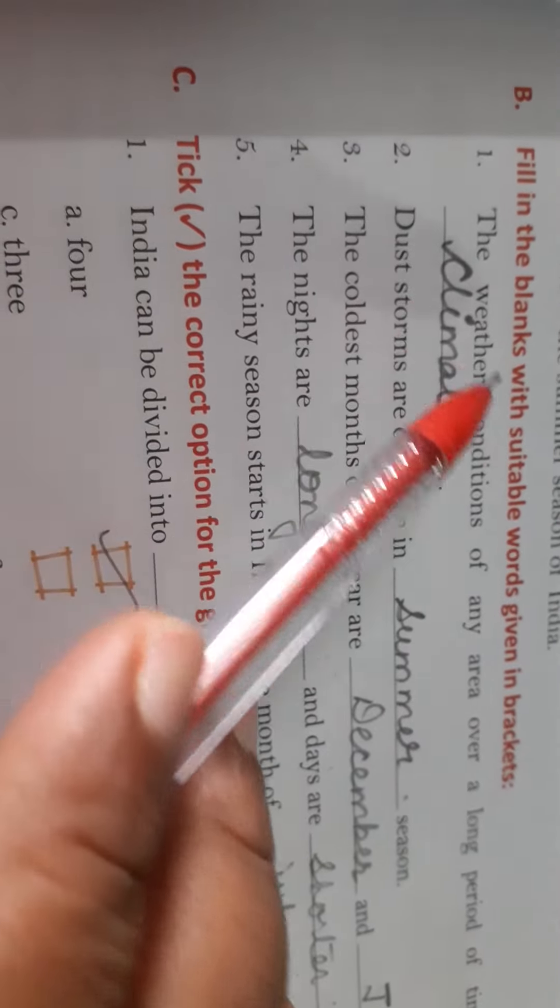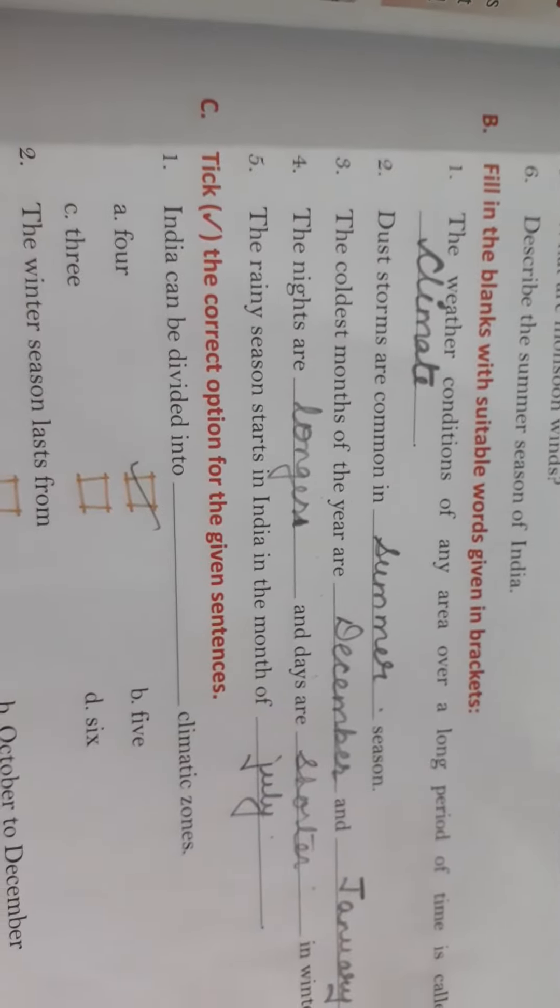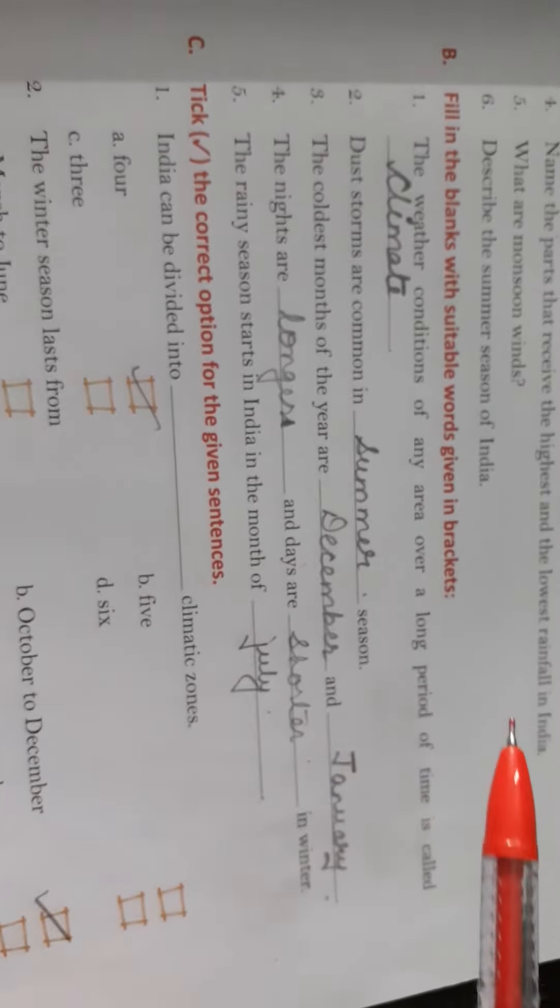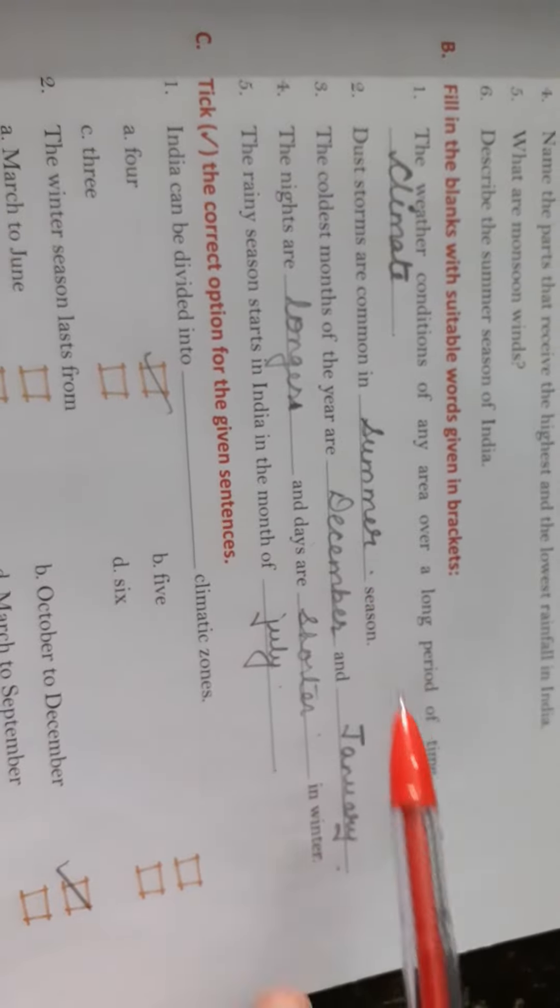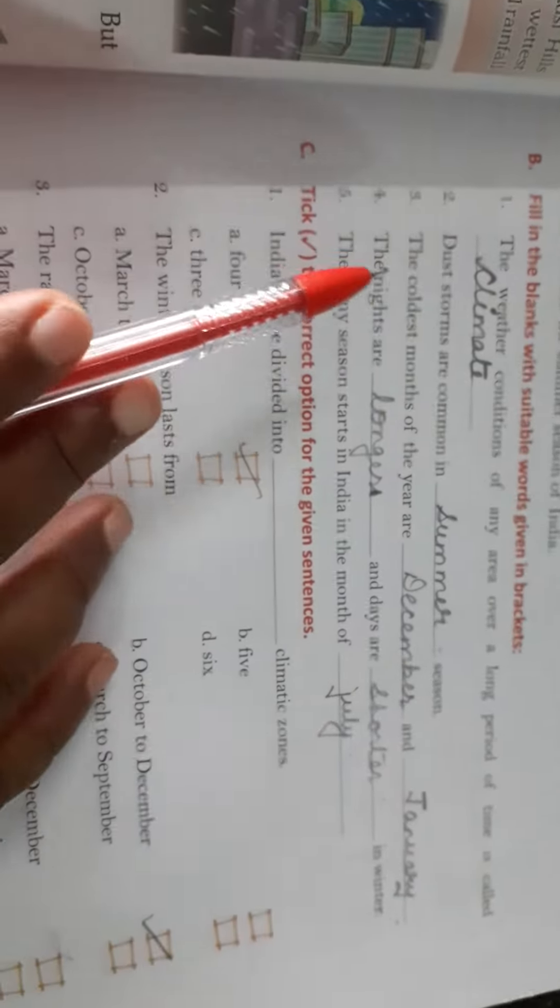First is fill in the blanks with suitable words given in bracket. The weather condition of any area over a long period of time is called climate.